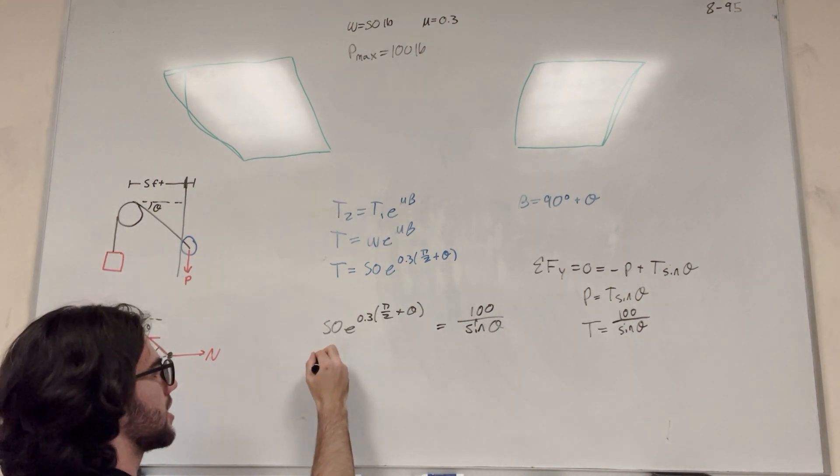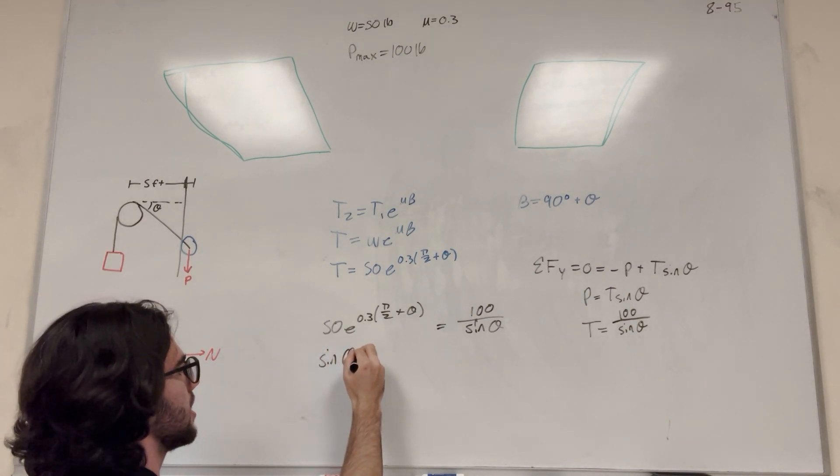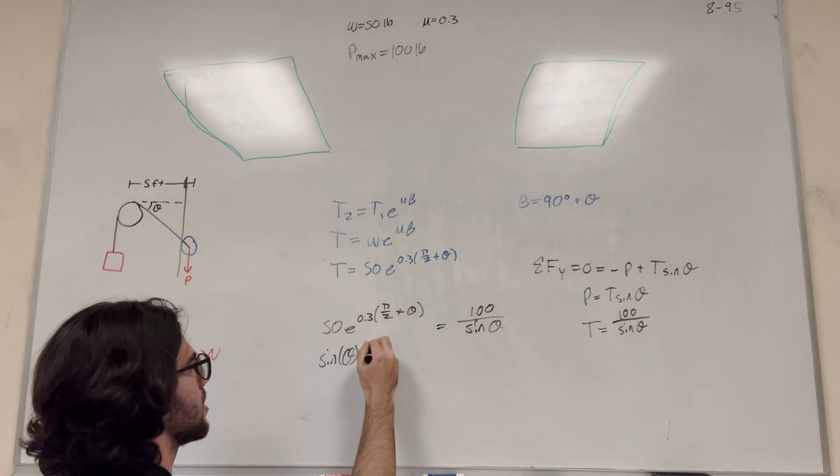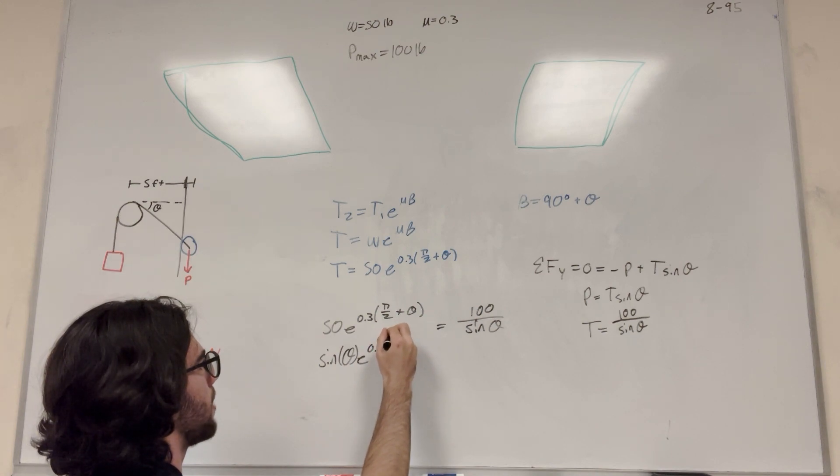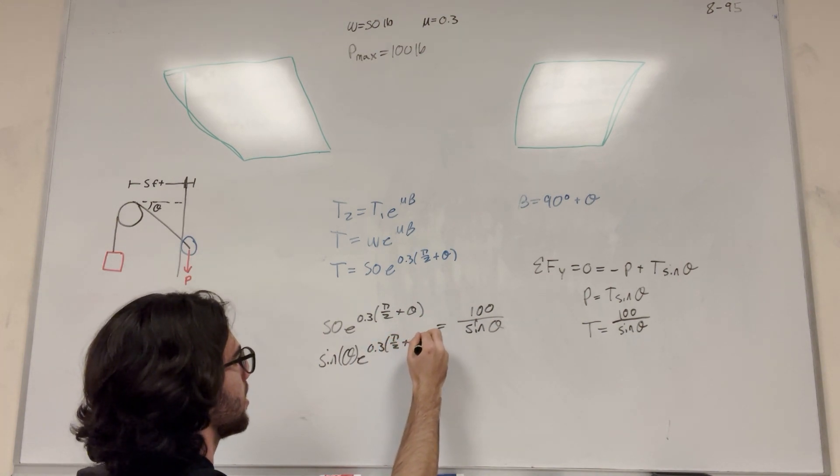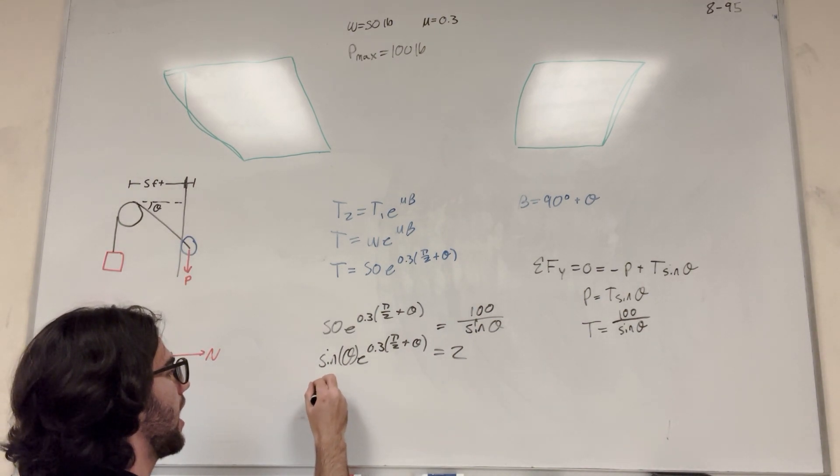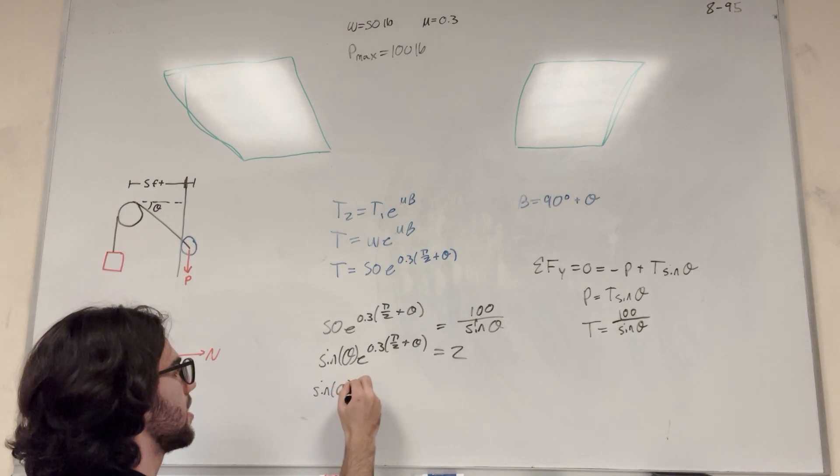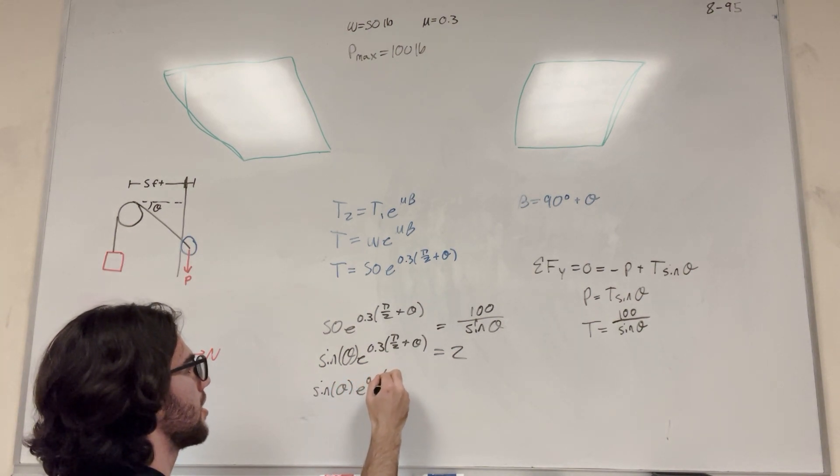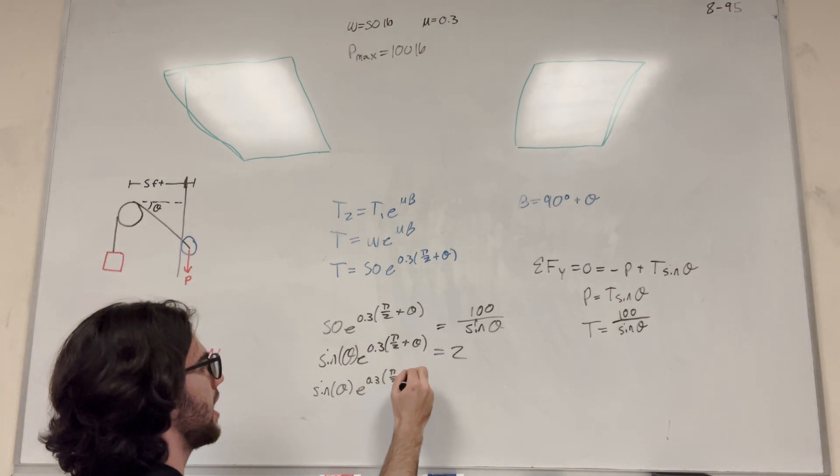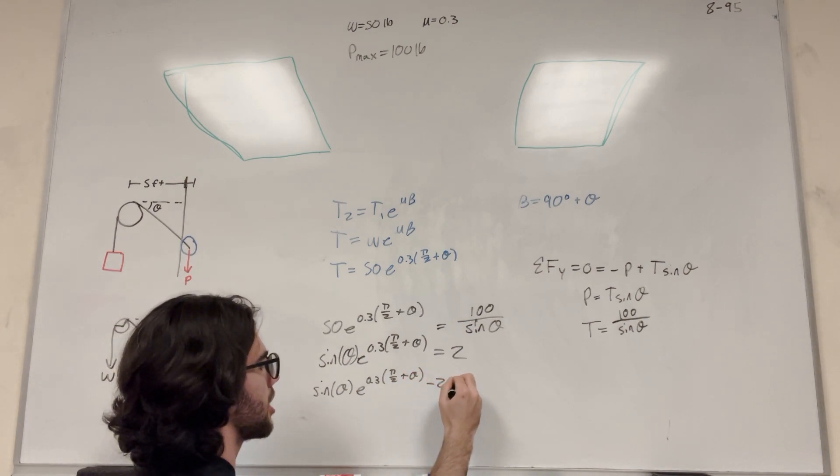So we're going to multiply the sine theta over and then the 50 and the 100 are going to kind of cancel out. So you're going to get sine of theta e to the 0.3 pi over 2 plus theta is equal to 2. So then let's go ahead and move this 2 over. So it's going to get sine of theta e to the 0.3 pi over 2 plus theta minus 2 is equal to 0.